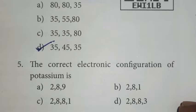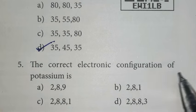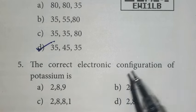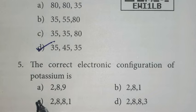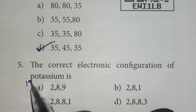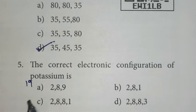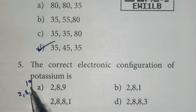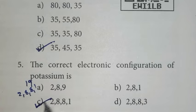Fifth one: the correct electronic configuration of potassium. For potassium, atomic number or proton number or electron number is 19. Its electronic configuration is 2, 8, 8, 1. If you add, we get 19. So according to this, option C is the right answer.